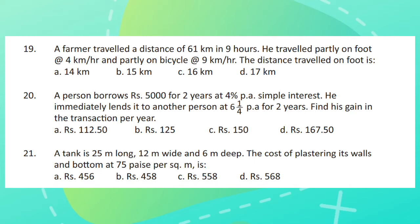Question 21. A tank is 25 meters long, 12 meters wide and 6 meters deep. The cost of plastering its walls and bottom at 75 paise per square meter is?